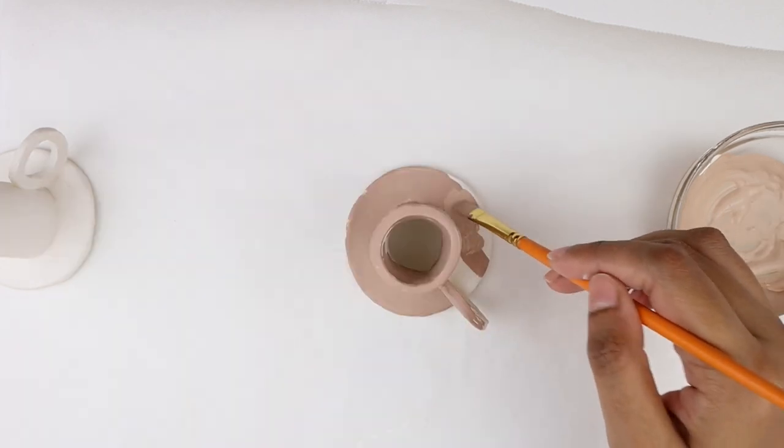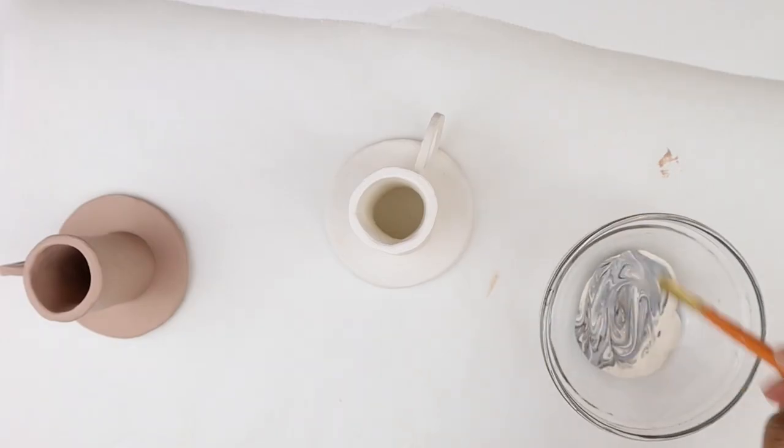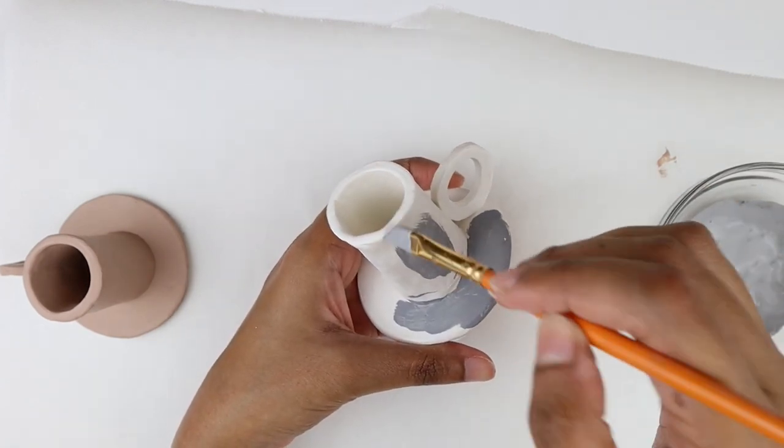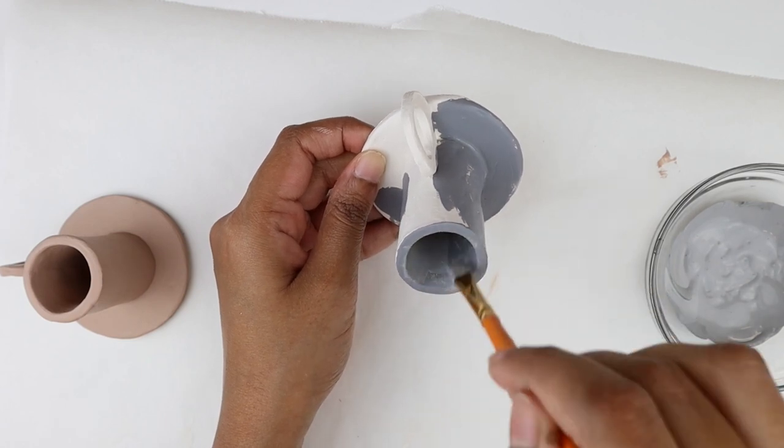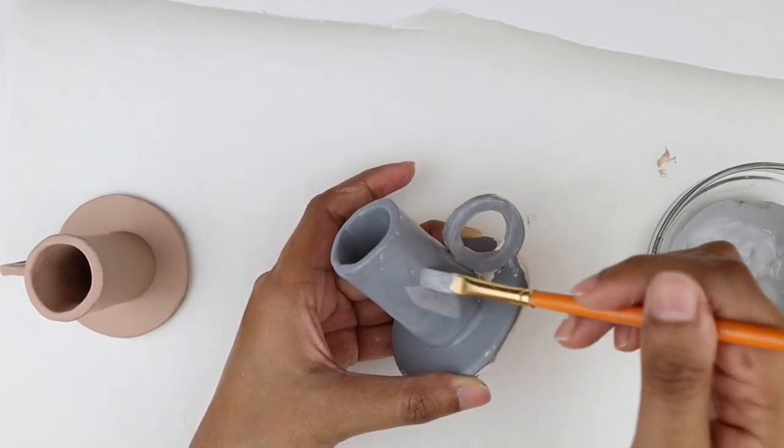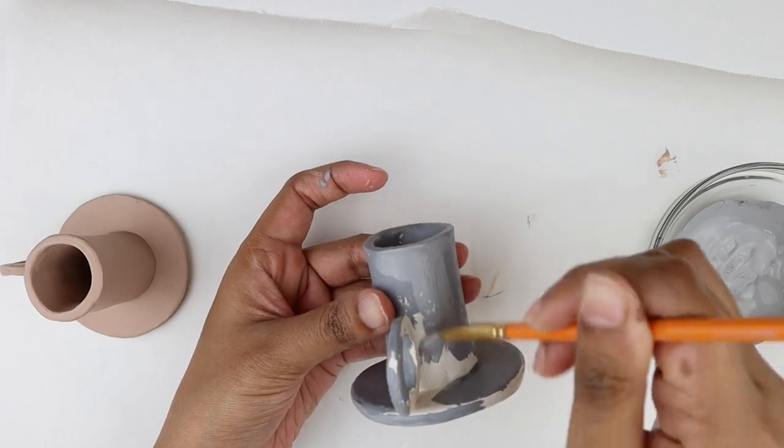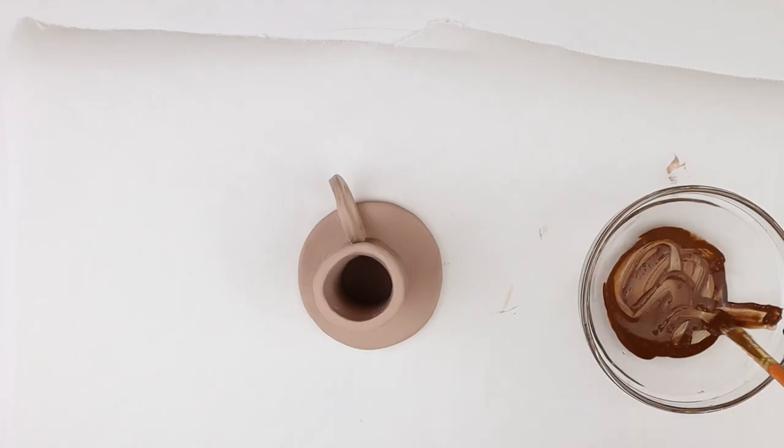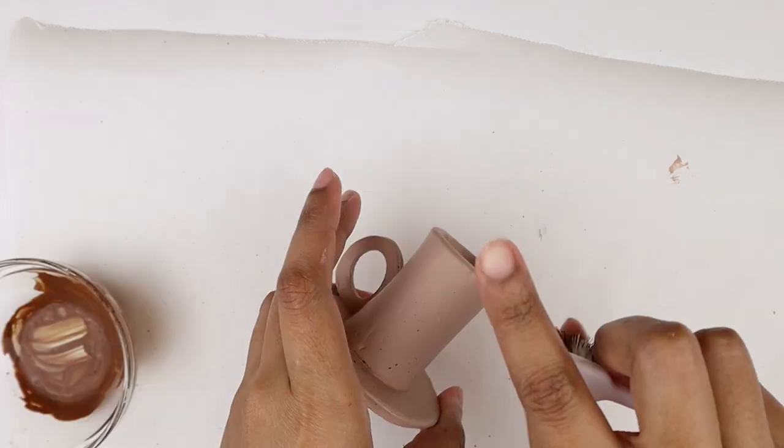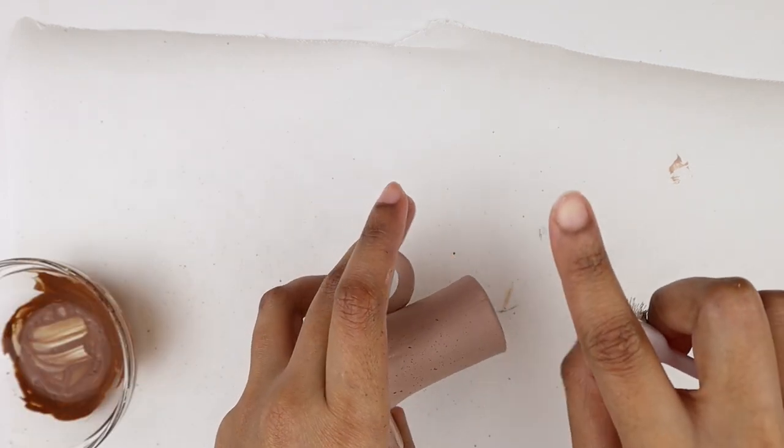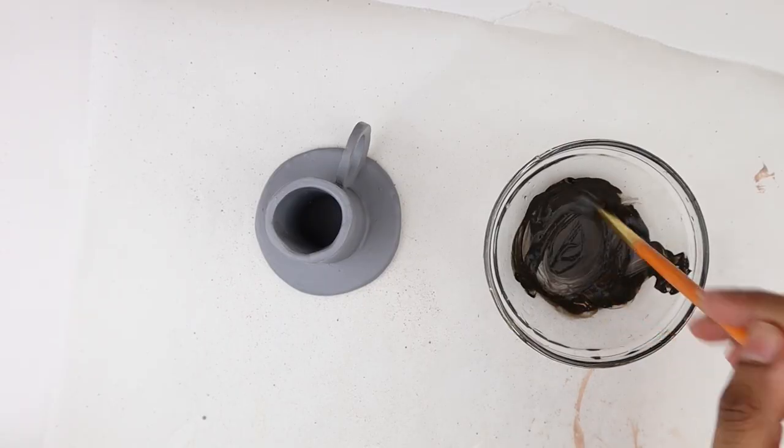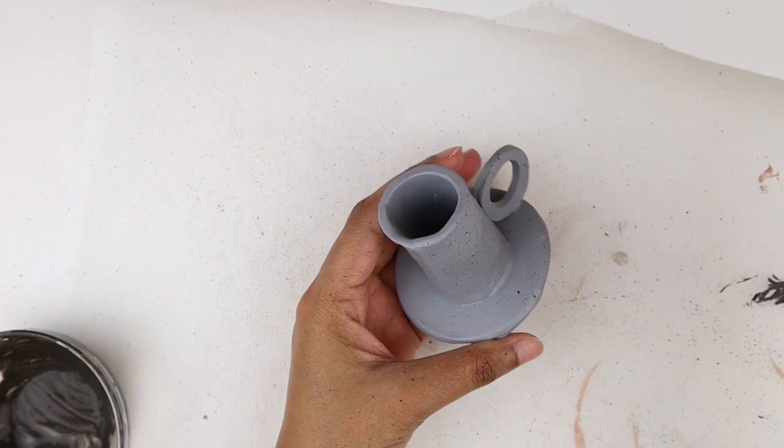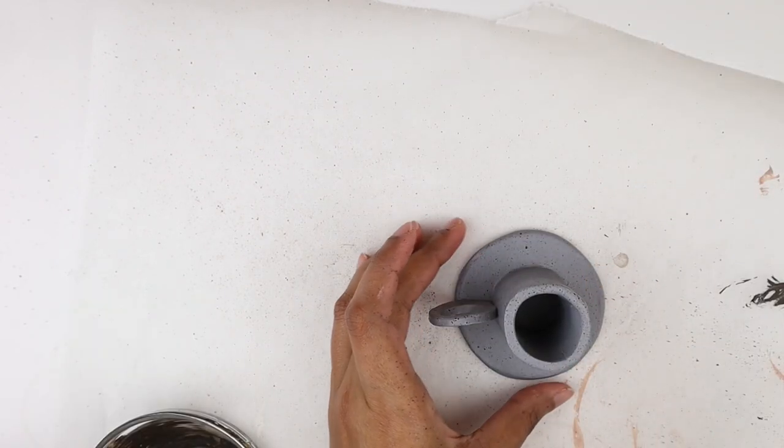To paint the other candle holder, I'm mixing some black, beige, and off-white. In the same way, I'm going to apply two coats of paint and I'm also making sure the paint gets into all the crevices. Then I'm taking some watered down chocolate brown paint and lightly spraying it all over the surface of the candle holder. On the other candle holder I repeated the same process after watering down some black and beige paint.